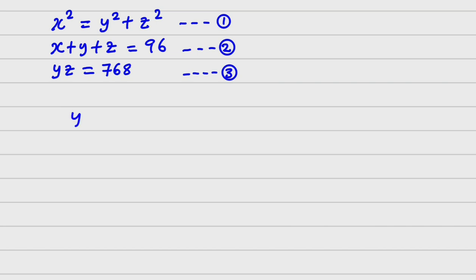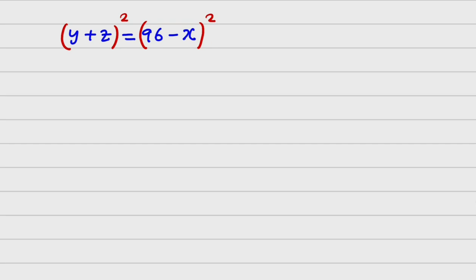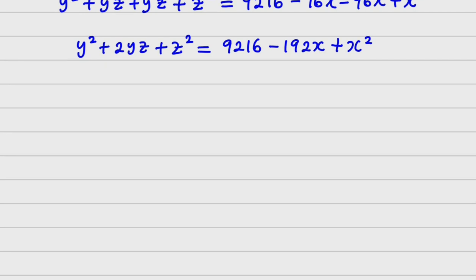From Equation 2, y plus z equals 96 minus x. We square both sides. Expanding, we get y squared plus 2yz plus z squared equals 9216 minus 192x plus x squared.